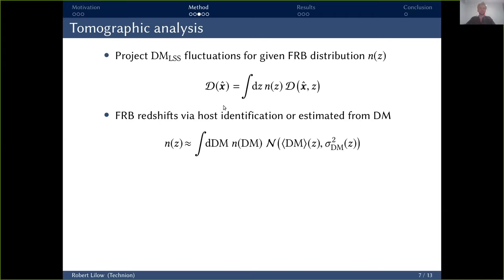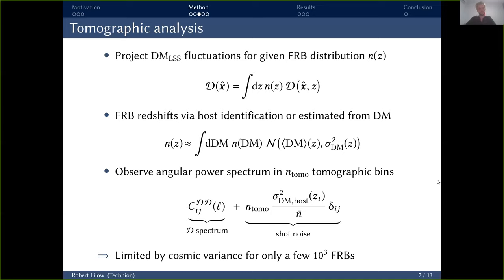Basically, what you do for that is invert the relation for the mean dispersion measure shown before and account for a scatter around the fluctuations both from the line of sight electron distribution as well as the scatter from the host. And in simulation, that was shown that this distribution was well approximated by a normal distribution. Now, one more problem. If we integrate over the whole line of sight, we're mixing all different scales of our signal, the longest and the shortest. However, we really want to be able to pick out the larger scales because those are most sensitive to our primordial non-Gaussianity signal. So the way we can do this is by not doing a full projection of the field, but introducing a number of tomographic bins. So that the overall signal that we observe has the contribution then from the large scale structure, the dispersion measure fluctuation spectrum in the bins i,j. And an additional contribution from shot noise, which depends on the scatter in the host as well as the mean density of the FRBs.